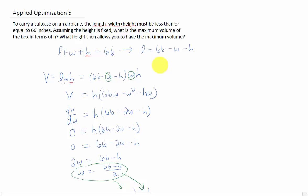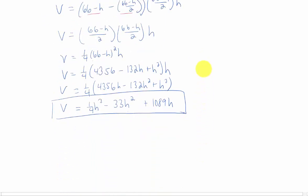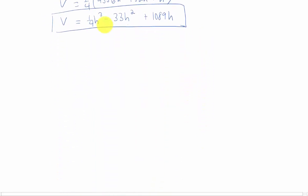But what the next problem asks us to do is to find the height that then allows us to have the maximum volume. So we're going to take this equation right here, and we're going to maximize it. That involves finding critical points. So we need to take a derivative, and we're going to set that derivative equal to 0.